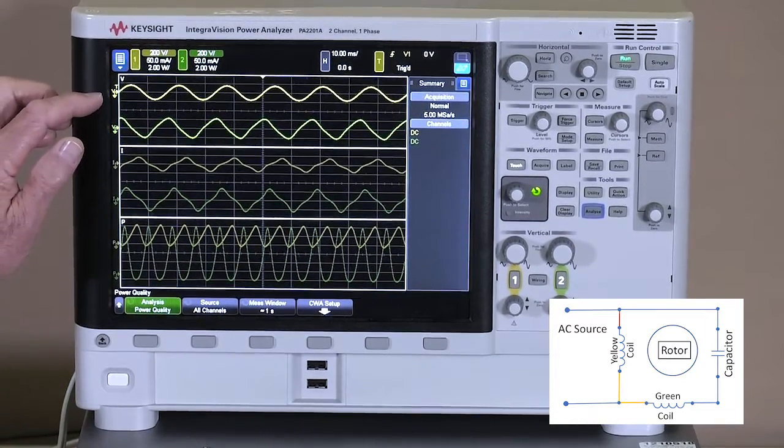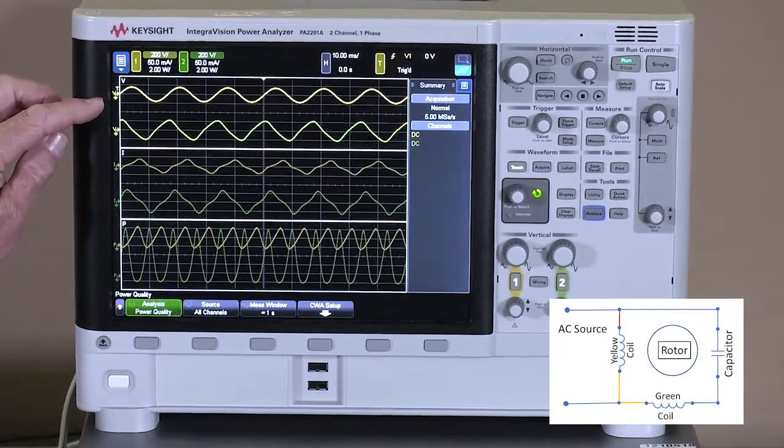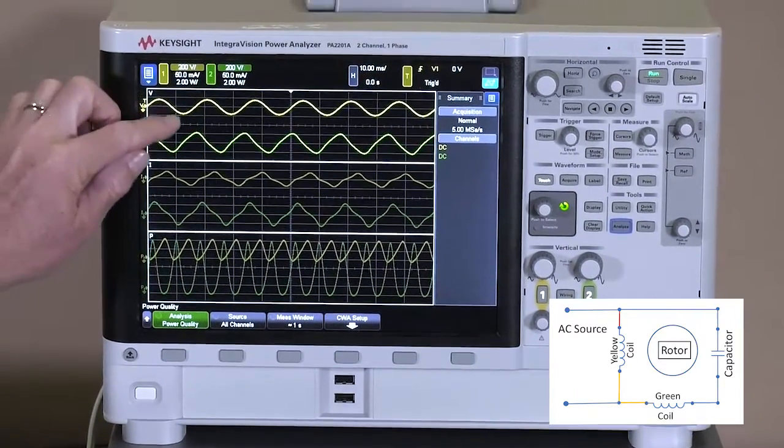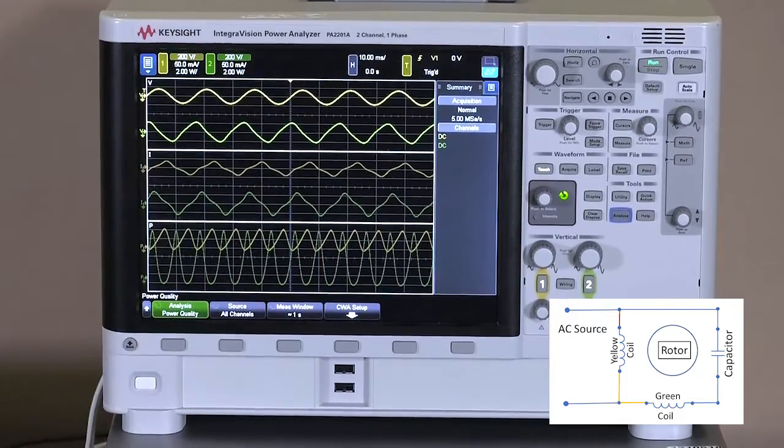So let's start with our yellow coil, and as you can see that's where we're applying the 110 volts. It's a nice clean sine wave being applied across that coil.